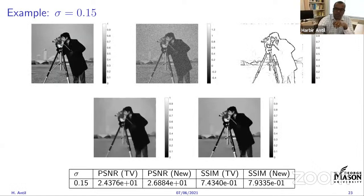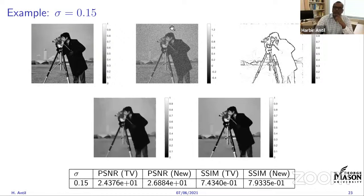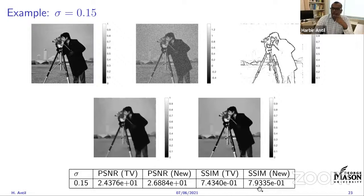Applying the s(x)-approach to another imaging example: starting from a noisy image, our method achieves a structural similarity index (SSIM) of about 0.80 versus 0.74 for total variation with optimized parameters. This improvement is significant since SSIM is already near the upper bound of 1. Higher is better.